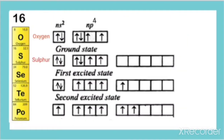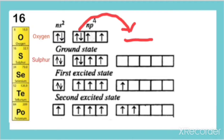But Oxygen cannot form +4 and +6 oxidation states like the other elements, because in the case of Oxygen there is an absence of vacant d-orbitals. So the electrons from the p-orbital cannot be excited to a vacant d-orbital, and therefore it does not show +4 and +6 oxidation states.